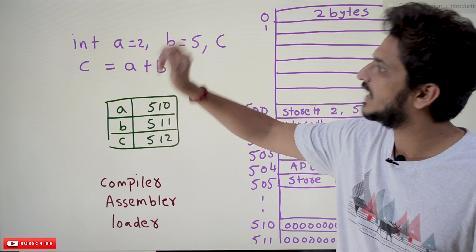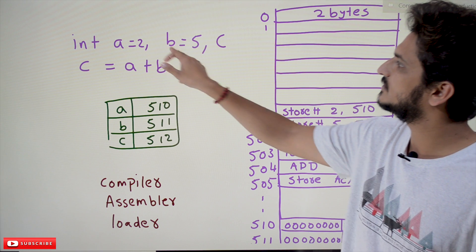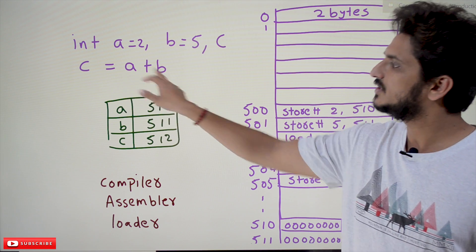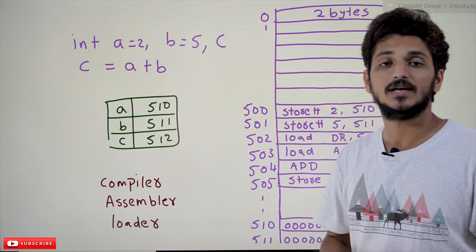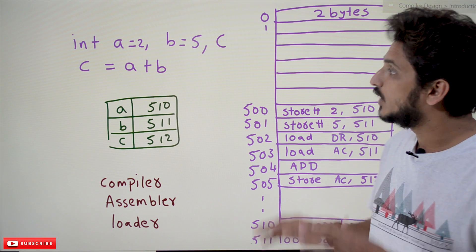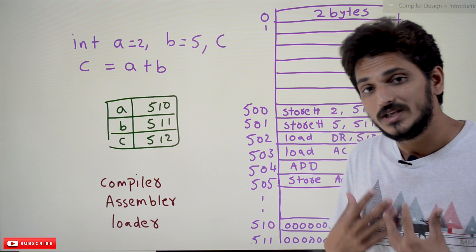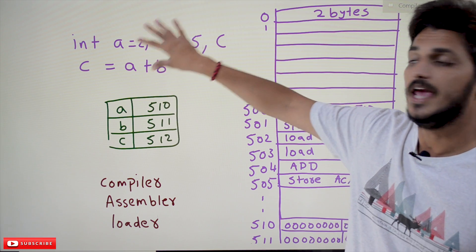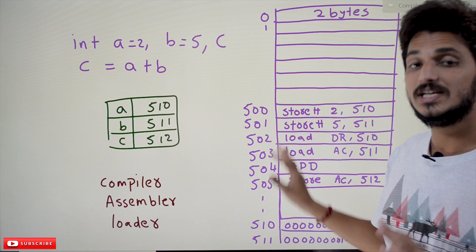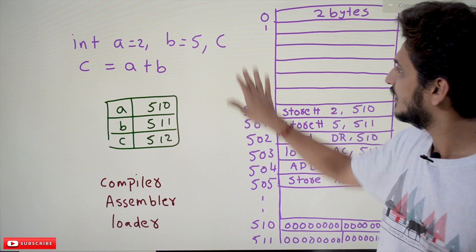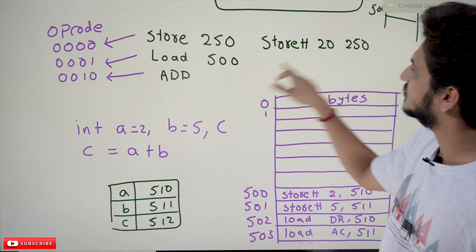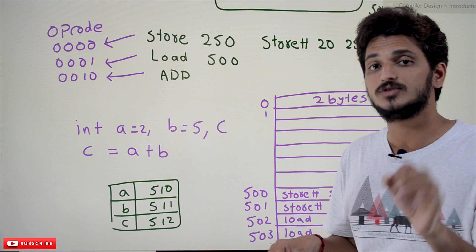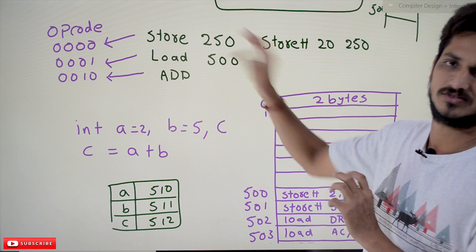Now coming to our subject. Take a high-level language — let's assume we have written code in C: int a = 2, b = 5, c = a + b. Our goal is to convert this high-level language into machine-level instructions, because the computer understands only these machine-level instructions.